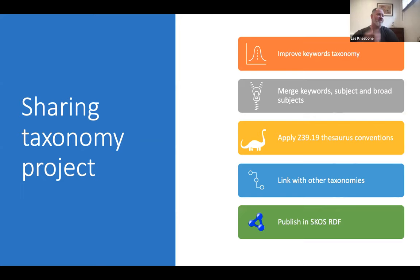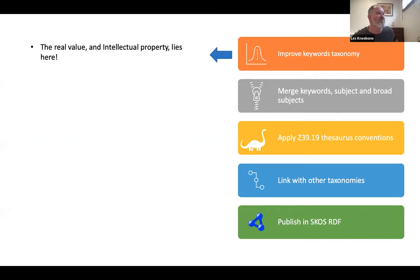To make a taxonomy shareable there are a few things I needed to do - I've got this in five steps. When I created this slide I asked Microsoft PowerPoint to come up with some icons and it came up with a dinosaur for the third step - I can only imagine that's because of the Thesaurus Rex cartoon. I thought I'd leave the dinosaur in because it was funny. First: improve the keywords taxonomy, because that is basically where the value was that APO had created.